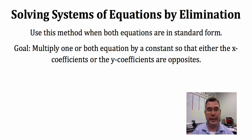The goal is you have two equations with x and y. The x's line up vertically and the y's line up vertically, but they may have different coefficients. The goal is to multiply one or both equations by a constant so that either the x coefficients or the y coefficients are opposites of each other. Let's go over an example.